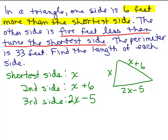The perimeter of any figure is just the sum of the sides. So this has three sides. So we want to add all three sides together. So we have the first side plus the second side, which is X plus 6, plus the third side, which is 2X minus 5 and that should equal the perimeter.